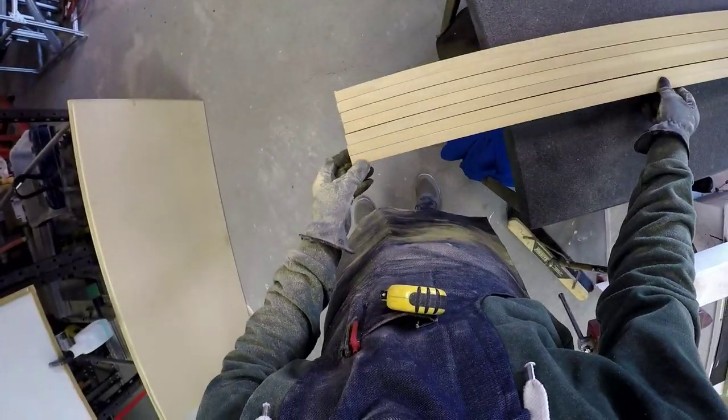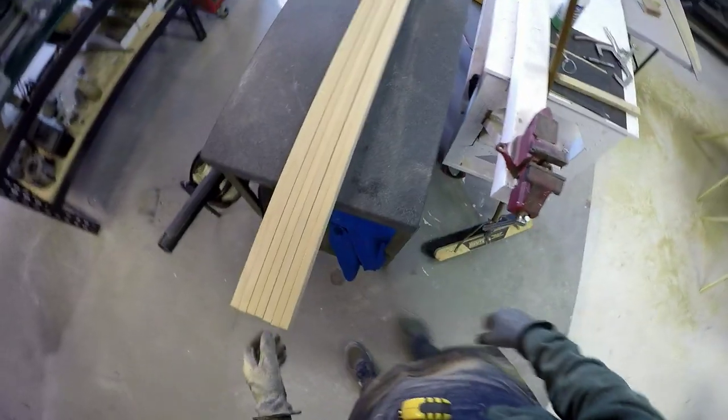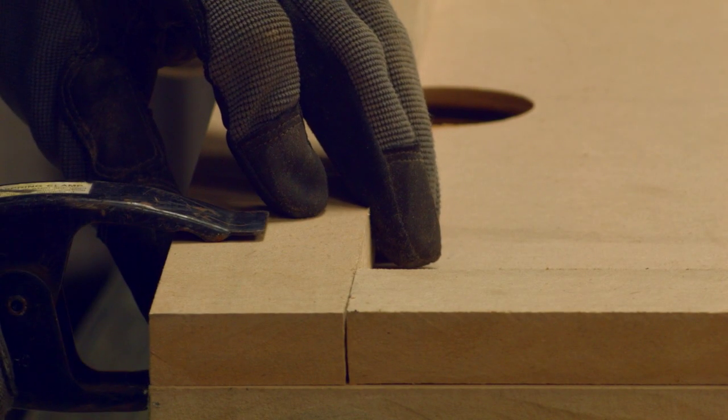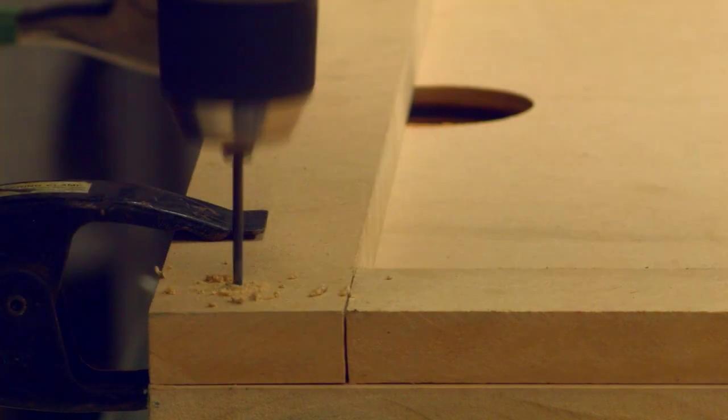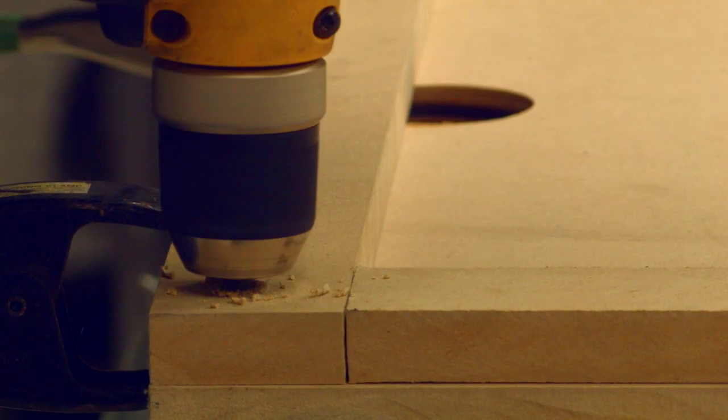All the parts are now made and I can start assembling the vacuum table. I pre-drill and set the screws for easy gluing.